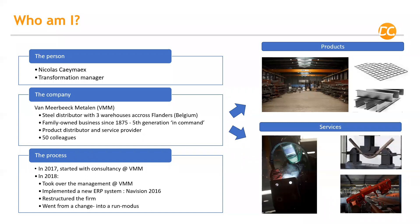I'm Nikola Kamax, I'm a transformation manager at Van Mierbeek Metalen, VMM. VMM is a steel distributor with three warehouses across Flanders, Belgium. It's a family-owned business since 1895 and I'm representing the fifth generation; we took over the management in 2018. We are a product distributor but also a service provider. We have about 4,000 items in our system, mainly steel — from steel mesh to steel beams, tubes, and so on. We also provide services like welding, bending, sawing, and so on. We have about 50 colleagues distributed over three warehouses across Flanders.